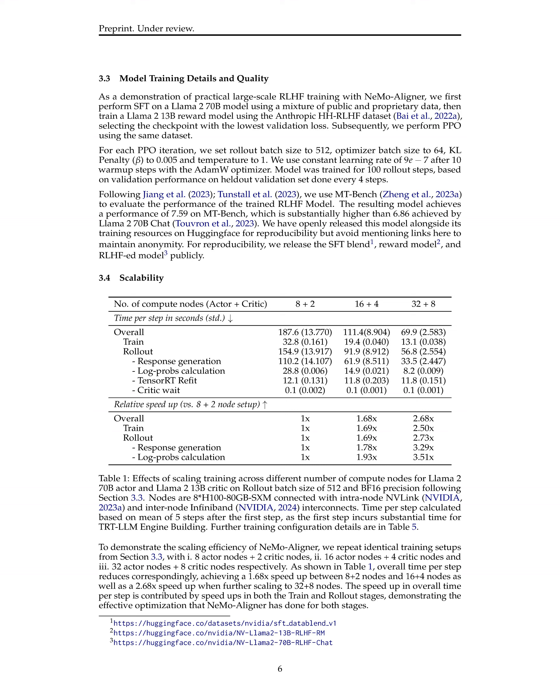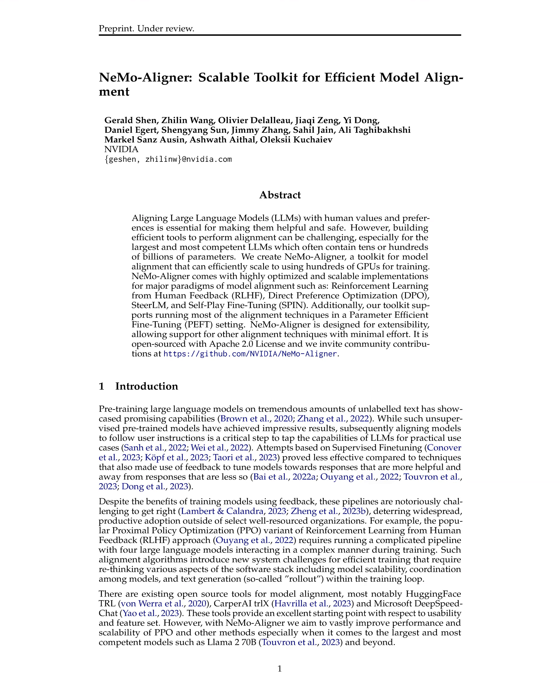Additionally, NEMO Aligner demonstrated scalability by achieving speed-ups of 1.68x and 2.68x when scaling from 8+2 nodes to 16+4 nodes and 32+8 nodes respectively, showcasing effective optimization for both training and rollout stages. The method's design — including TensorRT-LLM integration, distributed PPO training, and optimizations for PPO rollout — significantly contributed to high system performance, reducing time per iteration by leveraging asynchronous communications, load balancing, and efficient model training strategies.